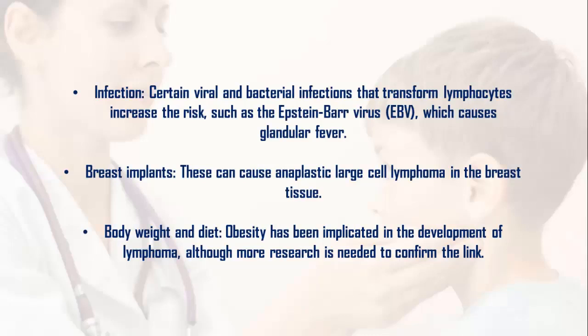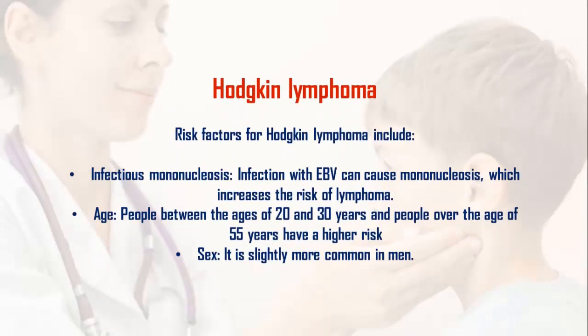7. Infection: certain viral and bacterial infections that transform lymphocytes increase the risk, such as the Epstein-Barr virus (EBV), which causes glandular fever. 8. Breast implants: these can cause anaplastic large cell lymphoma in the breast tissue. 9. Body weight and diet: obesity has been implicated in the development of lymphoma, although more research is needed to confirm the link.